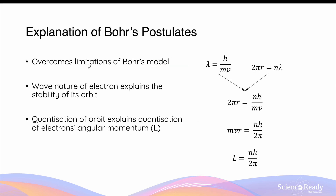De Broglie's matter wave hypothesis overcomes the limitations of the Bohr atomic model. Firstly, the wave nature of electrons as standing waves explains the stability of their orbits. When electrons orbit the nucleus as a wave, they do not lose energy in the form of radiation, and therefore they are able to maintain their orbit without spiralling into the nucleus. Secondly, de Broglie's equation explains the quantization of the electron's angular momentum, which was the third postulate of Bohr's model.